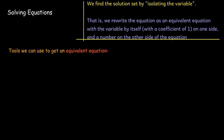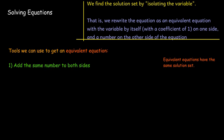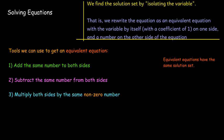Equivalent equations have the same solution set. We're going to do things to the equation which will not change the solution set but will make it simpler. For example, we could add the same number to both sides, or subtract the same number from both sides, or multiply both sides by any non-zero number — you can't multiply both sides by zero, as that will not give you an equivalent equation. And of course, you can divide both sides by the same non-zero number.